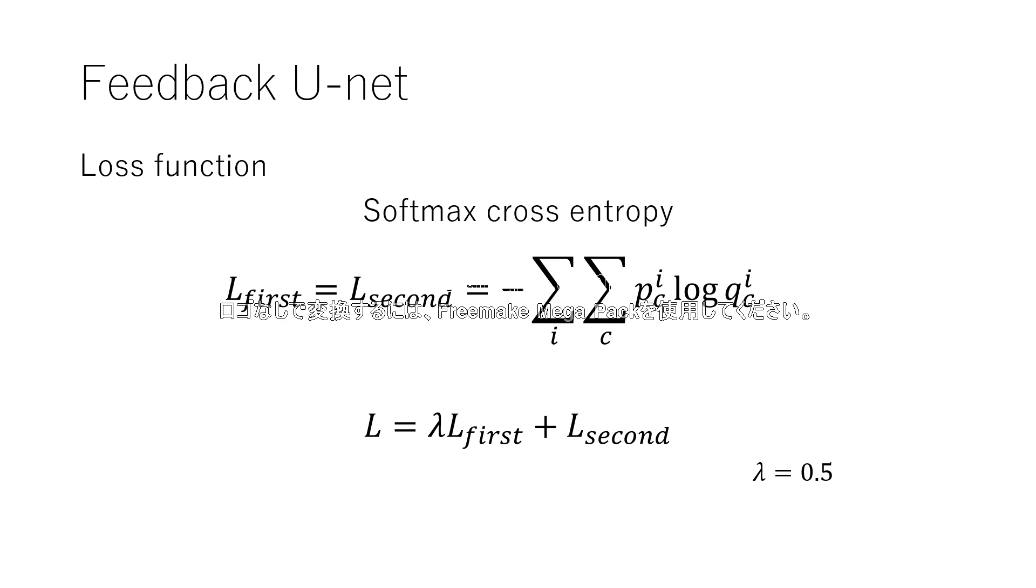Our model is trained with two loss functions, the loss for the first run and the second run. Both of them are defined as softmax cross-entropy loss. The overall loss is given by this equation. This lambda is a hyperparameter and we set 0.5 because second run is more important for segmentation.